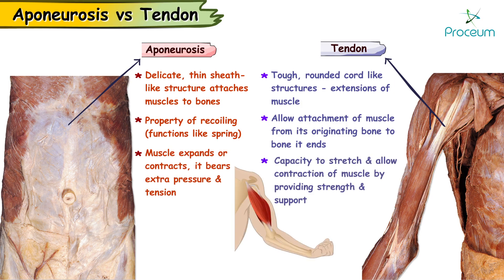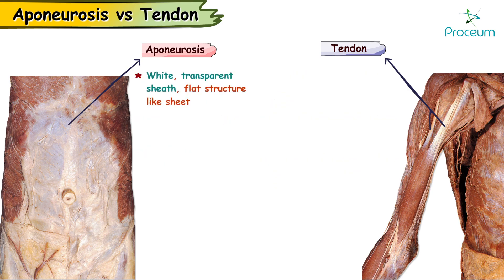Likewise, a tendon has capacity for a lot of endurance to stretching and they allow the proper contraction of the muscle by providing strength and support. Epineurosis is a white, transparent, flat structure-like sheet, whereas tendon is a white, shiny, and glazed rope-like tough structure.